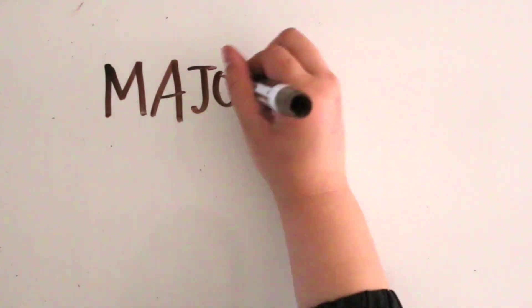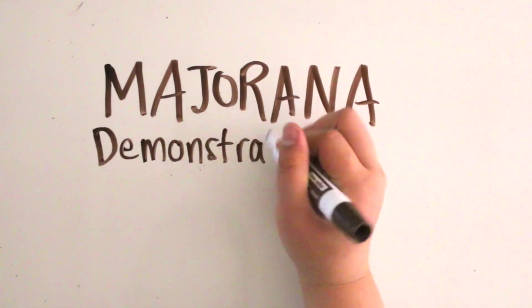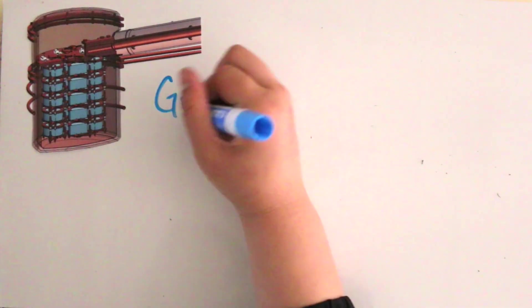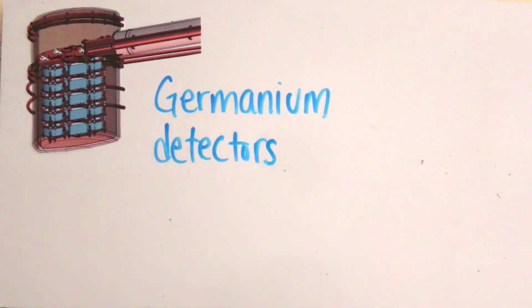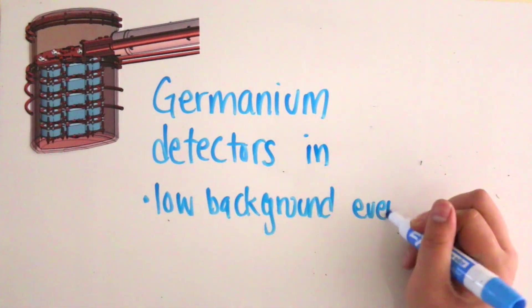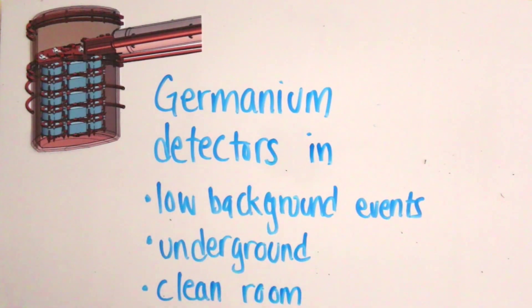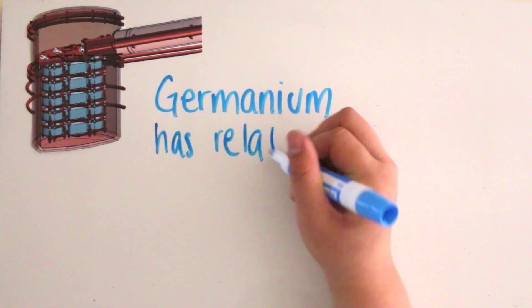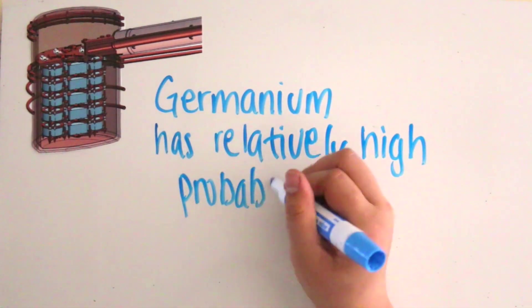A current experiment looking at neutrinoless double beta decay is called the Majorana Demonstrator. The experiment consists of a system of germanium detectors in an ultra-low background environment deep underground in a clean room. Because of the low probability of seeing neutrinoless double beta decay, we use germanium,